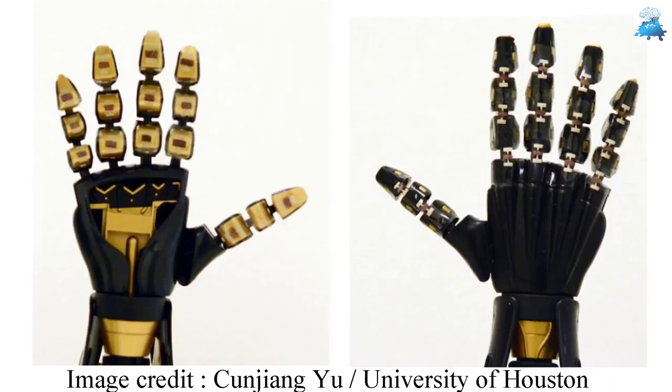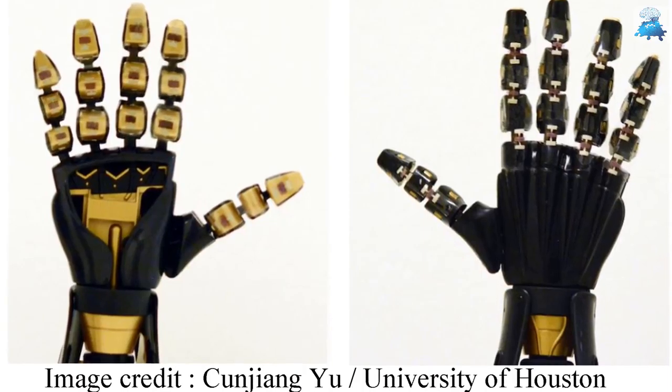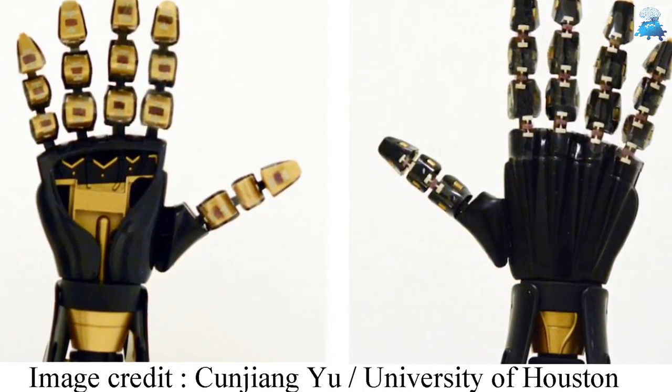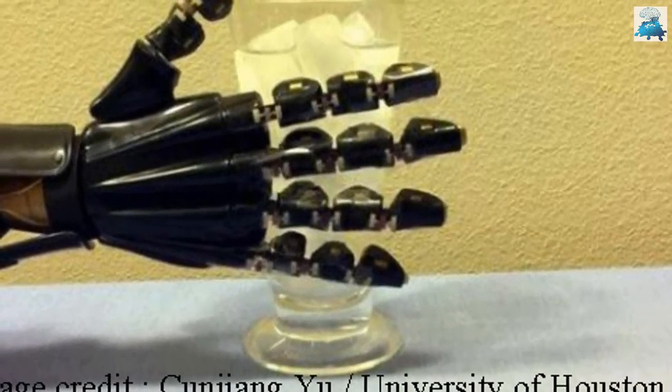A team of researchers from the University of Houston have created the first semiconductor in rubber composite format that enables stretchability without any special mechanical structure, which could give robots and a range of electronic devices a sense of touch.